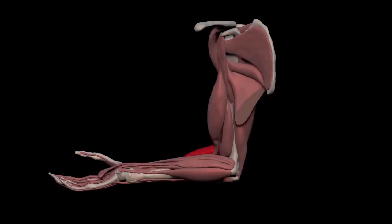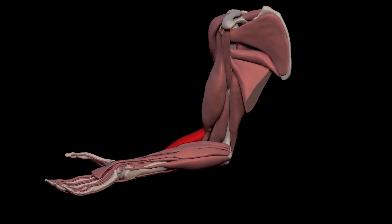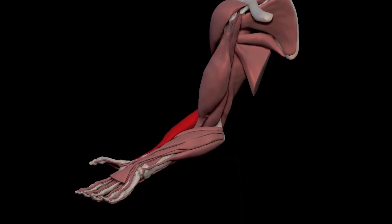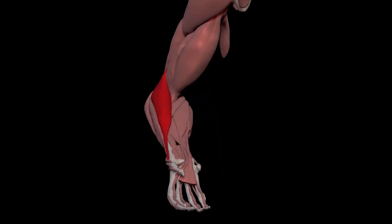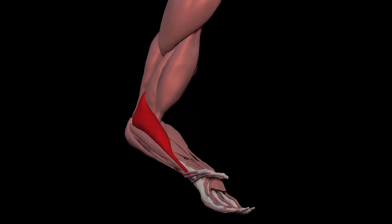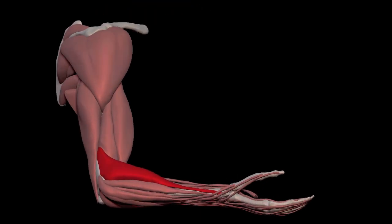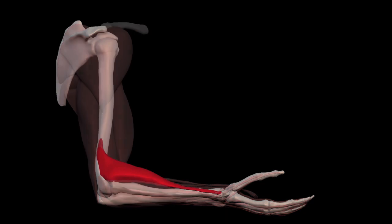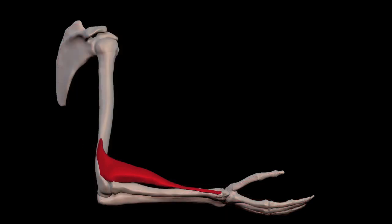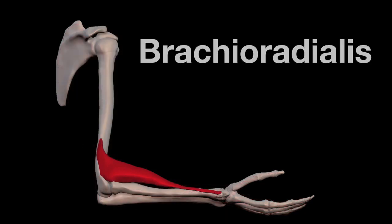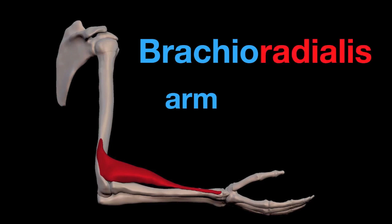The highlighted muscle is the brachioradialis. Let's dissect its name. Brachium means arm and radialis means radius.